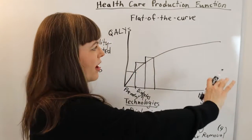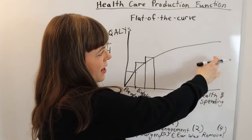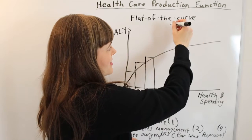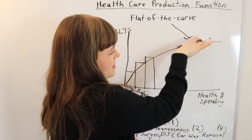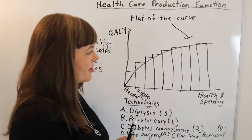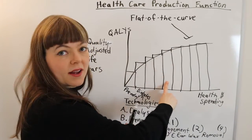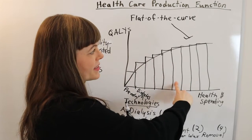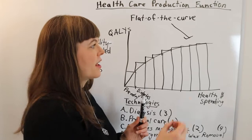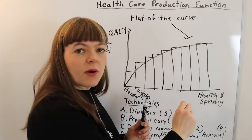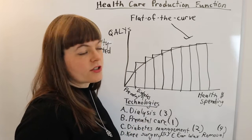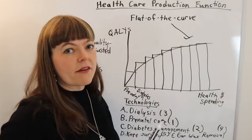Let me actually fill out this graph so we can think about what's over here on the flat of the curve — because of course this part is the flat of the curve, it's where that curve gets really, really flat. Earwax removal might be this one, knee surgery might be this one, but eventually once you get far enough out on this production function, each additional technology you add only adds a very, very tiny amount to the actual health of the population.